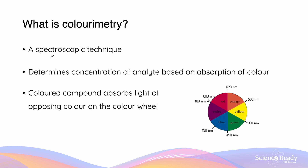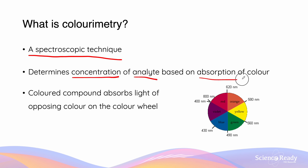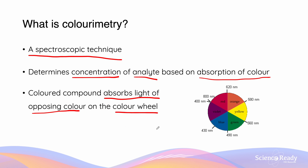Let's begin by talking about what colorimetry is. Colorimetry is a spectroscopic technique, and we can use it to determine the concentration of an analyte based on the absorption of a particular color. We should know that different colors of light have different wavelengths, and so the basis of a colored compound is that it absorbs the light that's on the opposing color of the color wheel.